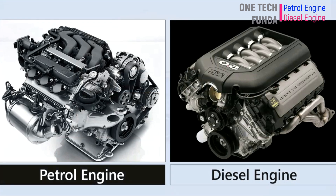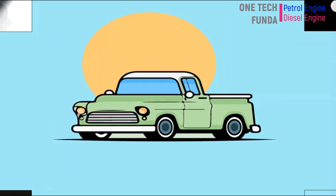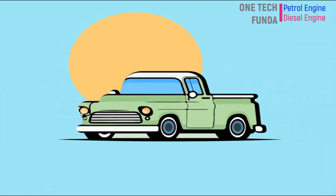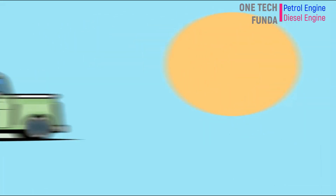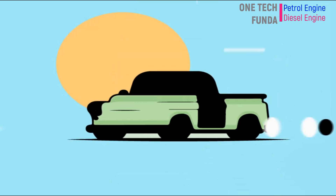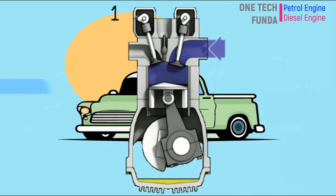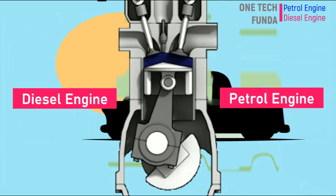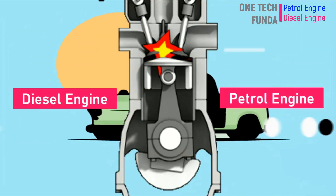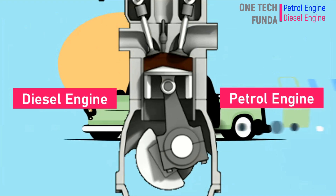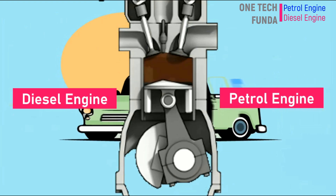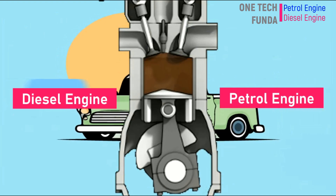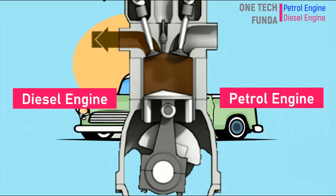Cars, trucks, buses, and other automobiles run on engines based on fossil fuels. The two most common types of engine are petrol engine and diesel engine. Most of the vehicles run either on petrol engine or diesel engine.